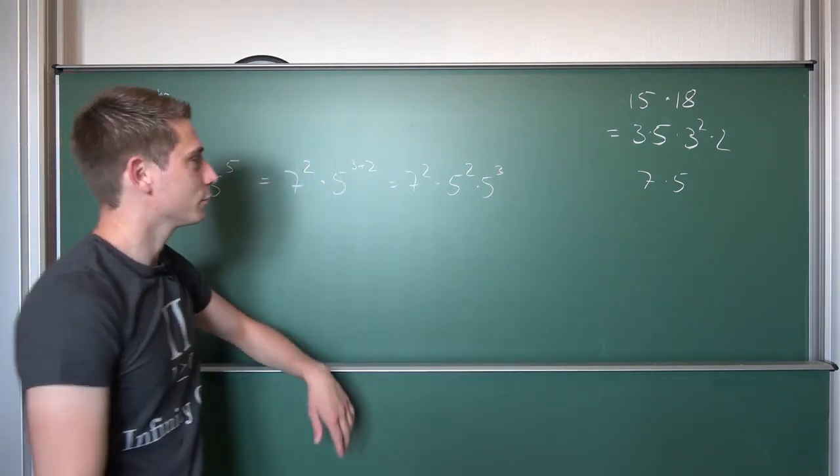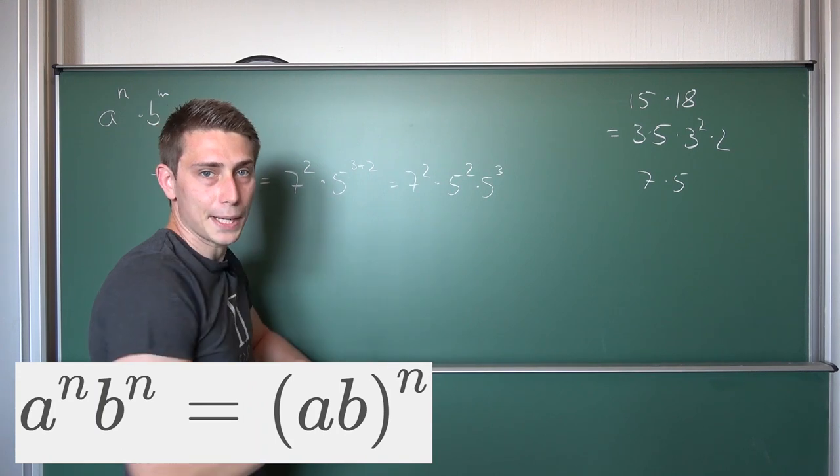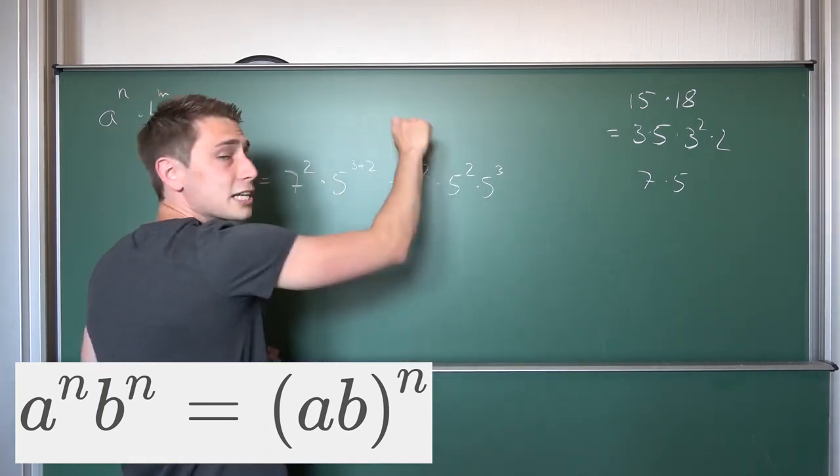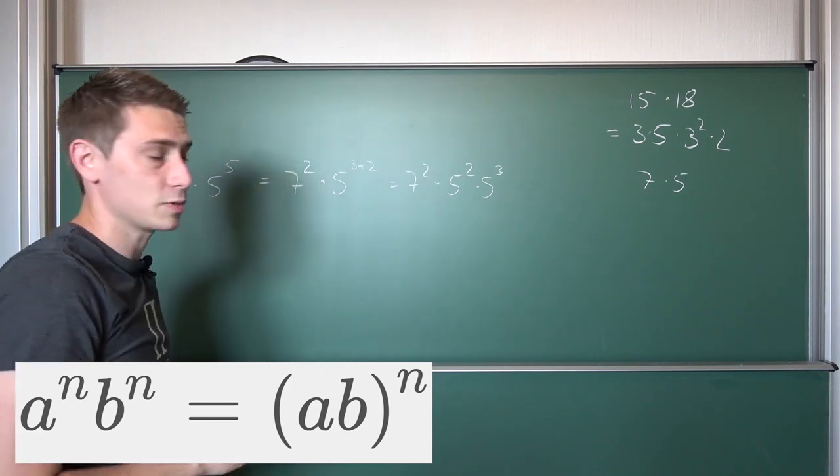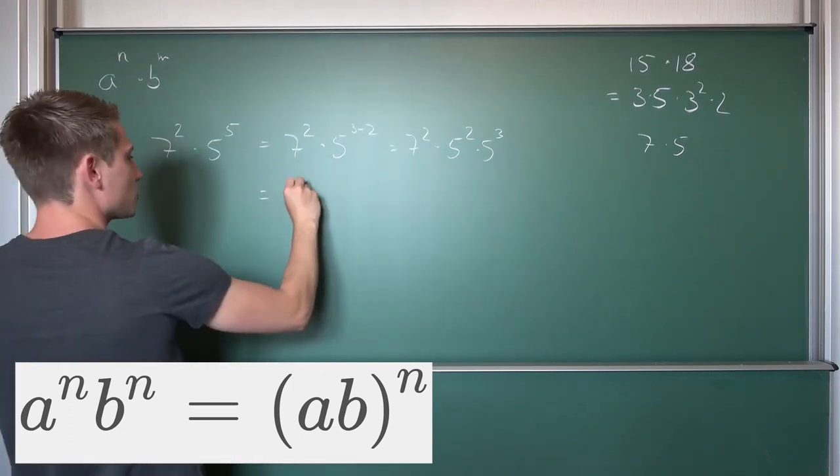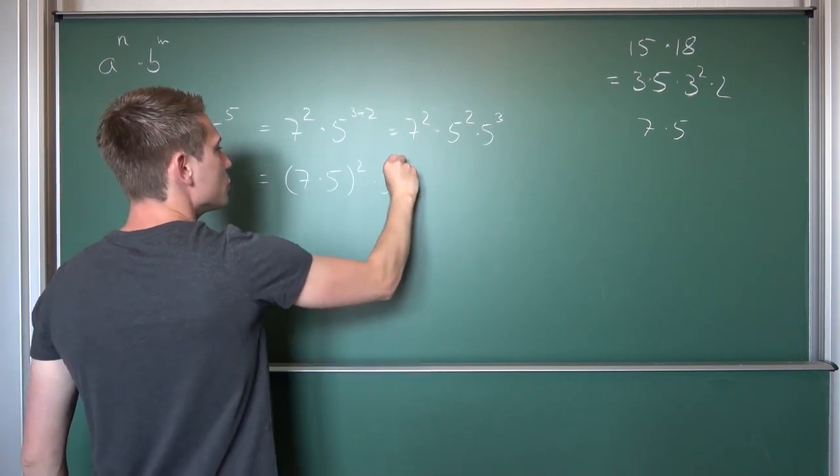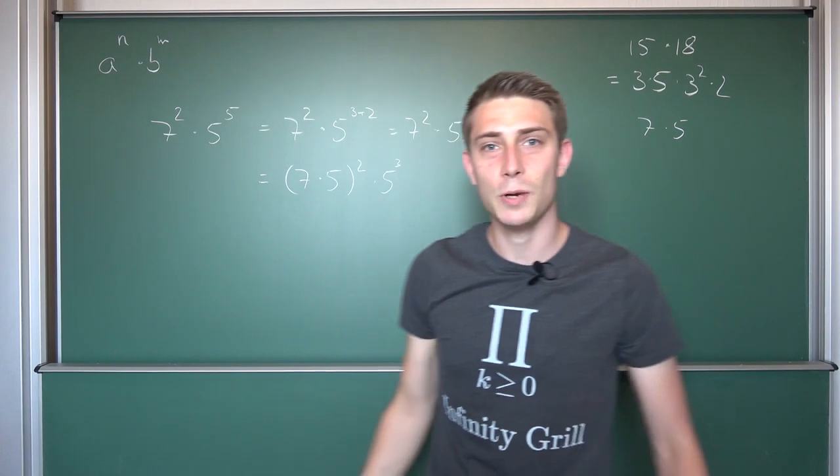And now there's a really cool thing. We are multiplying different bases but same exponents together. Meaning, we are going to use associativity, bring the exponent to the outside. That was one of the exponentiation rules. And we are going to get 7 times 5 and the whole thing squared times 5 to the 3rd power. And then we are done.